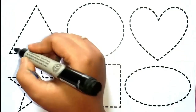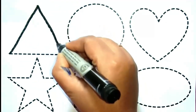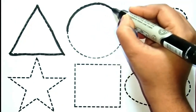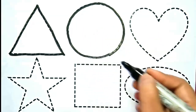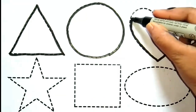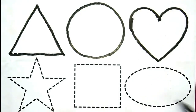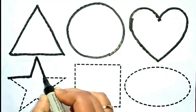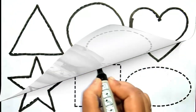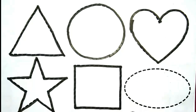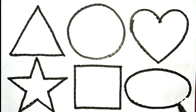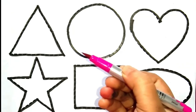Black color. Let's learn today's shape names: Triangle, Circle, Heart, Star, Square, Oval. Triangle. Circle. Heart. Square. Oval. Yeh hai pink color.